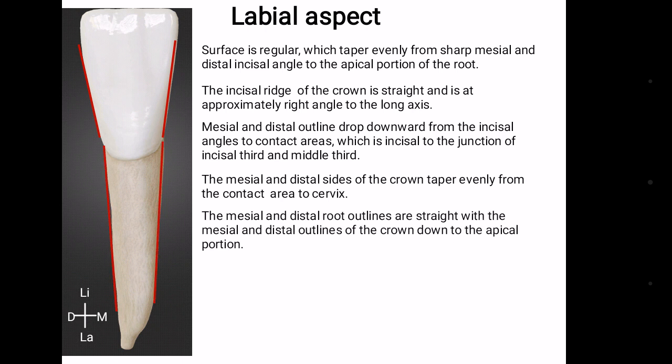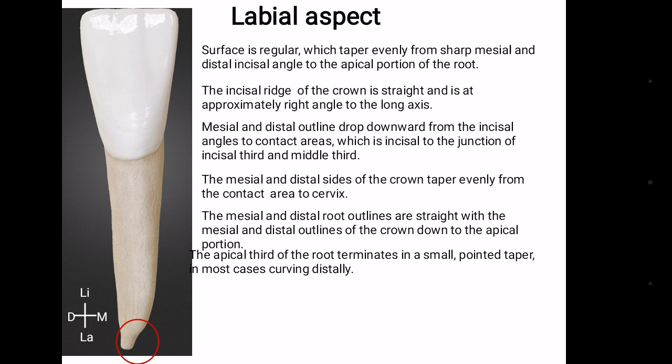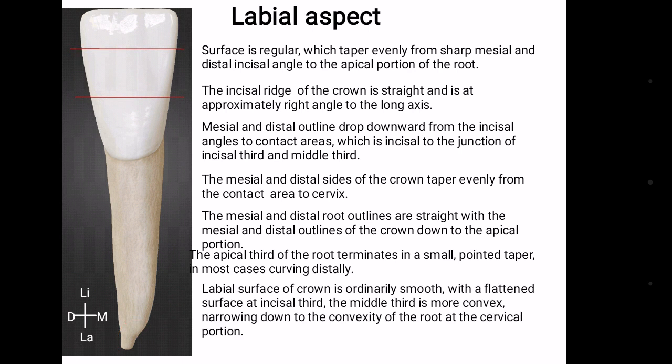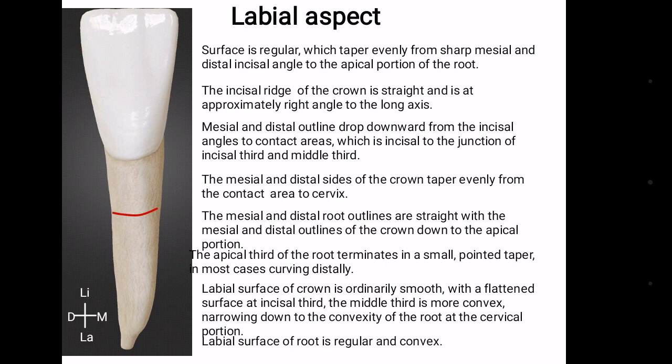The mesial and distal root outline are straight with the mesial and distal outline of the crown down to the apical portion. The apical third of the root terminates in a small pointed tapering root which is curved distally, though sometimes it is also straight. The labial surface of the crown is ordinarily smooth with a flat surface at the incisal third. The middle third is more convex and narrows down to the convexity of the root at the cervical portion. The labial surface of the root is regular and convex.